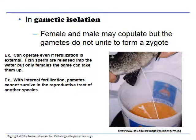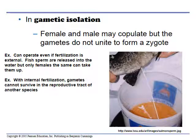Gametic isolation is similar — the gametes are not physically compatible. In the ocean, sea urchins and many invertebrates simply release sperm and eggs into the water. It works because the sperm and egg of each species are only compatible with that species — there are proteins and compatibility issues so they will not bind with other species. They can all release their gametes into the ocean and will find the correct species to fertilize.